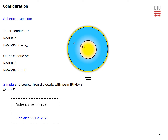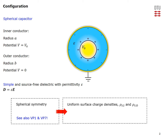Obviously there is spherical symmetry in the problem — you can also refer to video problem 1 and video problem 7 for details on the implications of spherical symmetry. Here I can tell you that this implies the charge will be uniformly distributed on the surface of the inner and outer conductors, and that the electric field will have an outward radial direction. The same will of course hold true for the D field.